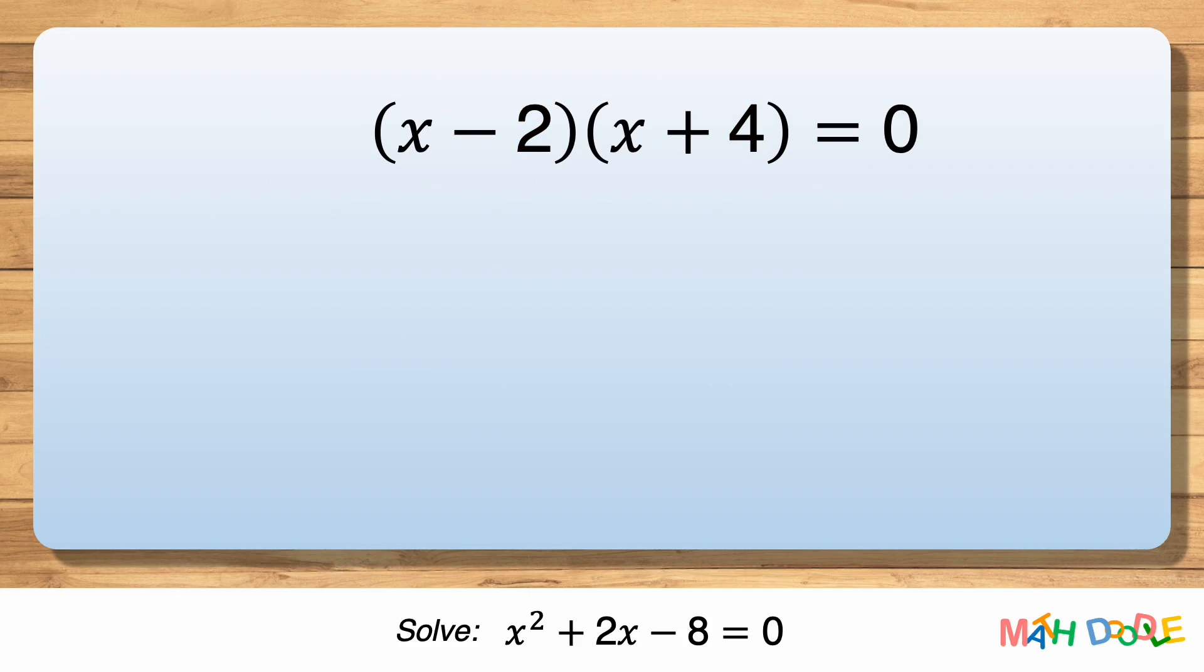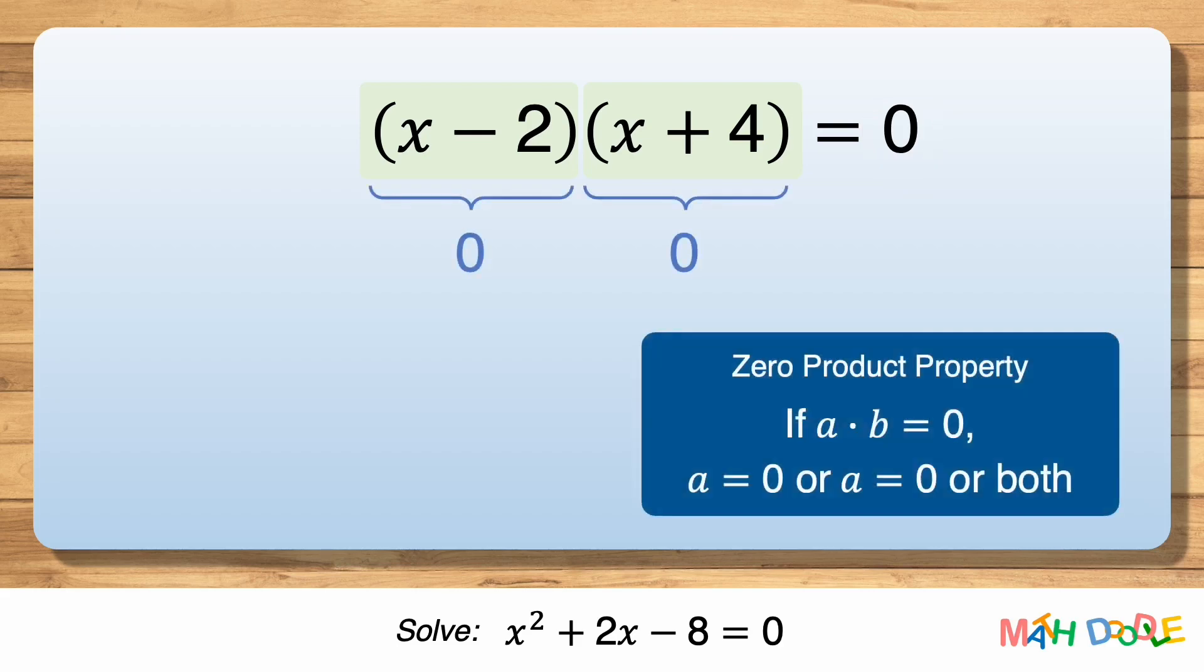Now, this equation tells us that the product of x minus 2 and x plus 4 is 0. So, to make the equation true, at least either x minus 2 or x plus 4 must be 0.